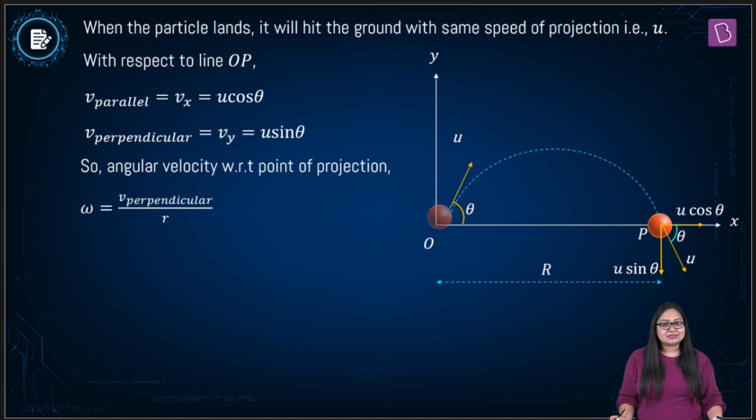Just substitute values. Omega is equal to v perpendicular upon r, u sine theta divided by r. r is range over here. So this becomes u sine theta divided by u squared sine 2 theta by g.